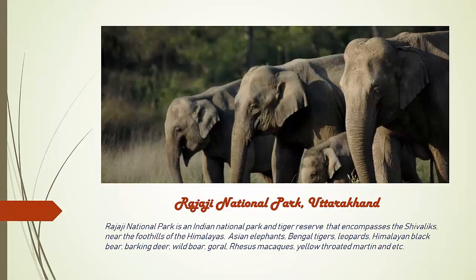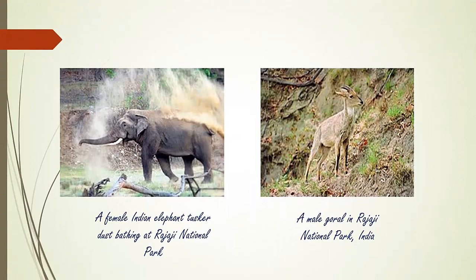Rajaji National Park is an Indian national park and tiger reserve that encompasses forests near the foothills of the Himalayas. Rajaji National Park is located in Uttarakhand. Examples of wildlife include female Indian elephant, tusked dust-bathing, and male Gaur.